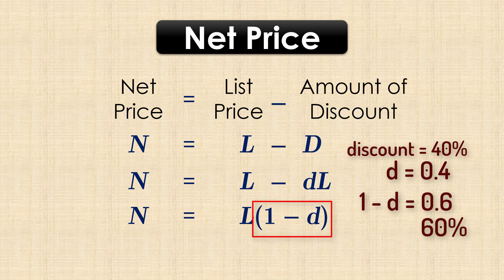And the customer is paying 60% of the list price. 1 minus D is thus a complement, or the opposite, of the discount percent.